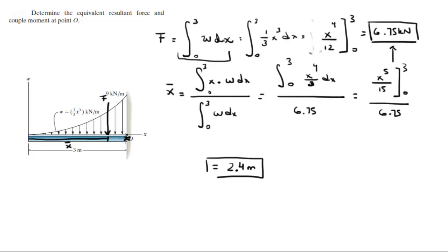But they want the moment at O, so this is the distance that we're trying to find, D. So the moment is equal to the force times the distance D. The force is 6.75, the distance D is 3, this length.